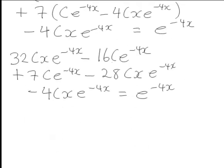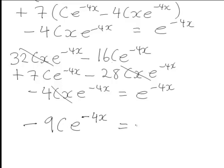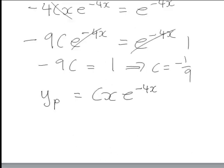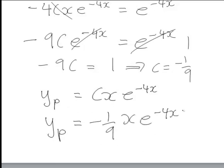Expanding: 32cx e to the negative 4x minus 16c e to the negative 4x plus 7c e to the negative 4x minus 28cx e to the negative 4x minus 4cx e to the negative 4x equals e to the negative 4x. The cx e to the negative 4x terms (32 minus 28 minus 4) cancel to zero, leaving negative 16c e to the negative 4x plus 7c e to the negative 4x, which simplifies to negative 9c e to the negative 4x equals e to the negative 4x. Cancelling e to the negative 4x gives negative 9c equals 1, hence c equals negative one ninth. Therefore yp equals negative one ninth x e to the negative 4x.